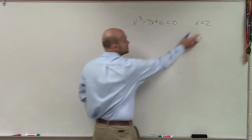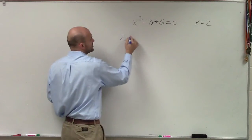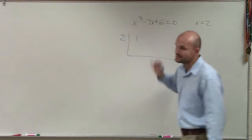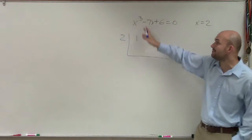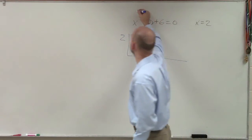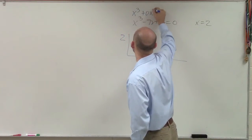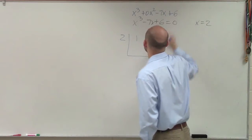So to apply synthetic division, we know this is our zero, so remember we have our zero on the outside, then we take our coefficients. 1, and now we notice, here's an example where we do not have an x squared term. So if we were to look at this, I could write x cubed plus 0x squared minus 7x plus 6.